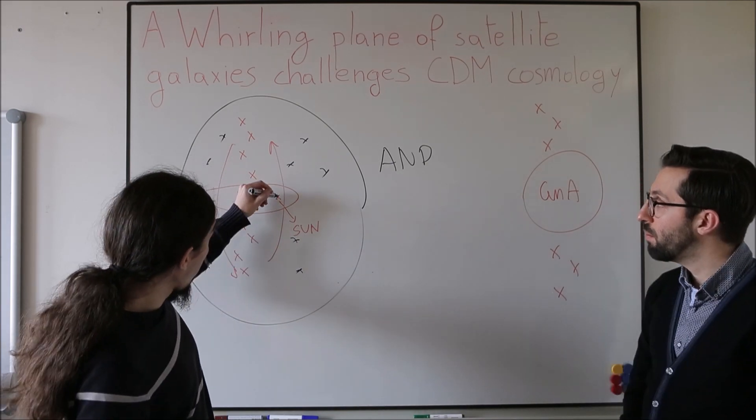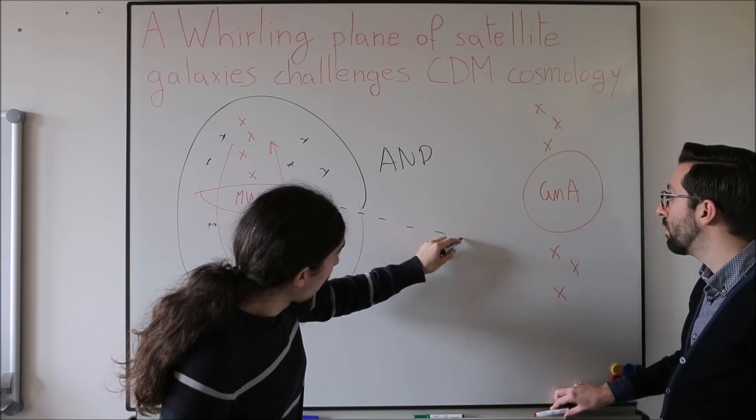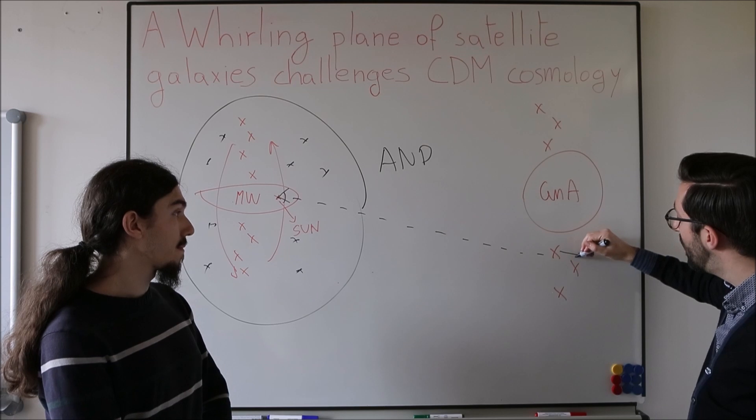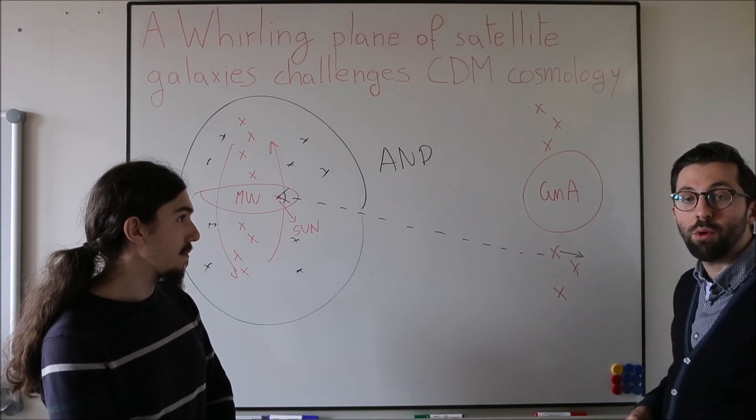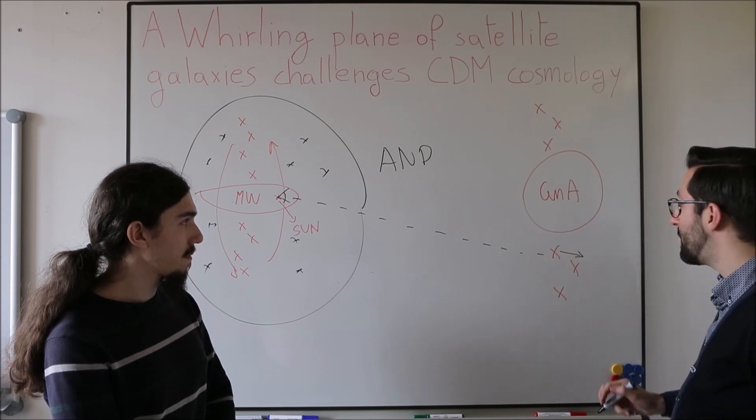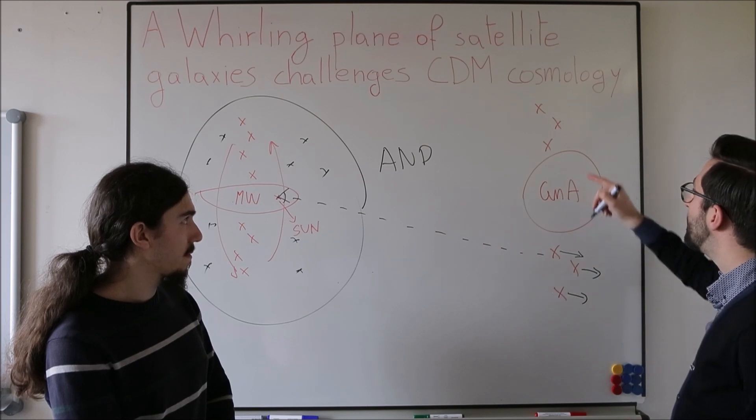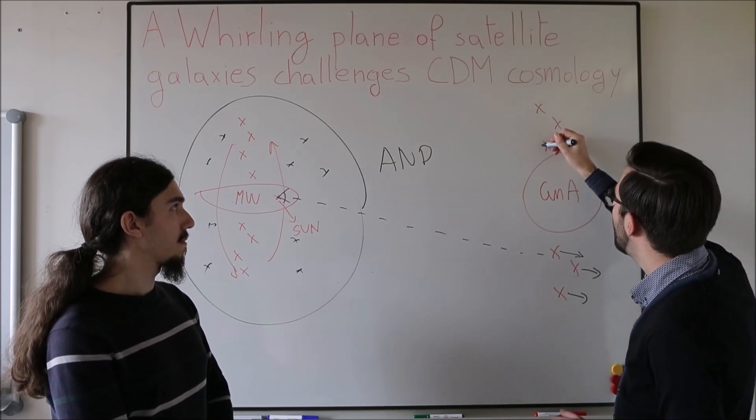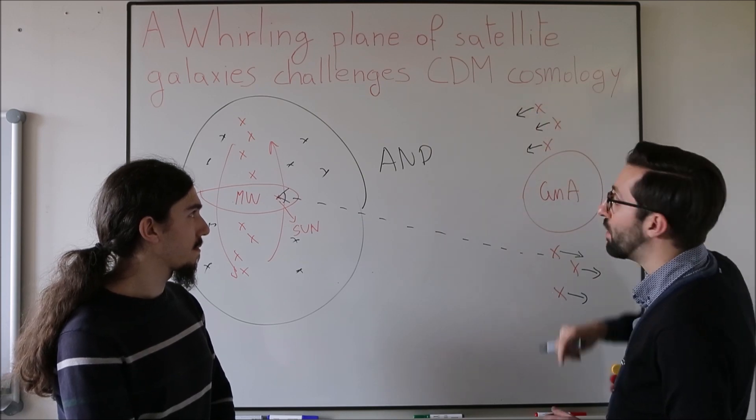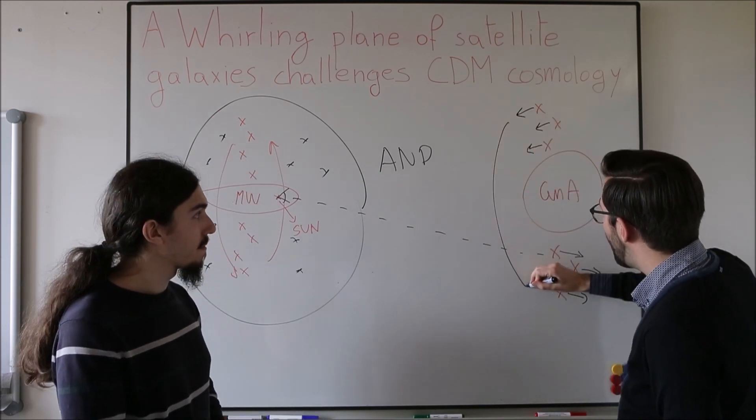From Earth, if we point our telescopes, we can measure the velocities along the line of sight towards the satellite. Essentially, we measure this velocity component. What we find is that the satellites to the south of Centaurus A tend to move away from us, whereas the satellites to the north of Centaurus A tend to move towards us with respect to Centaurus A velocity. This suggests co-rotation within the plane. Essentially something like this.